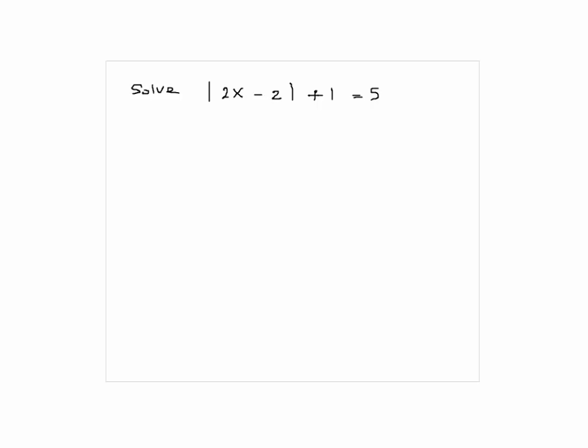Okay, what is your first step? Try again please. I'll take 2X and then take it out of the absolute value and make it 2X plus 2 plus 1 equals 5.